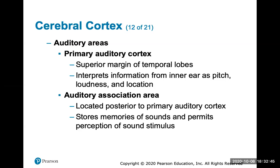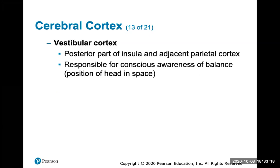The primary auditory cortex and its association area are at the superior margin of your temporal lobes — the lobe beneath the temporal bone, surrounding your ear area. The auditory areas interpret information from the inner ear: pitch, loudness, and location. The auditory association area, located posterior to the primary auditory cortex, stores memories of sounds and permits perception of sound stimuli. The vestibular cortex is the posterior part of the insula, responsible for conscious awareness of balance and head position in space.